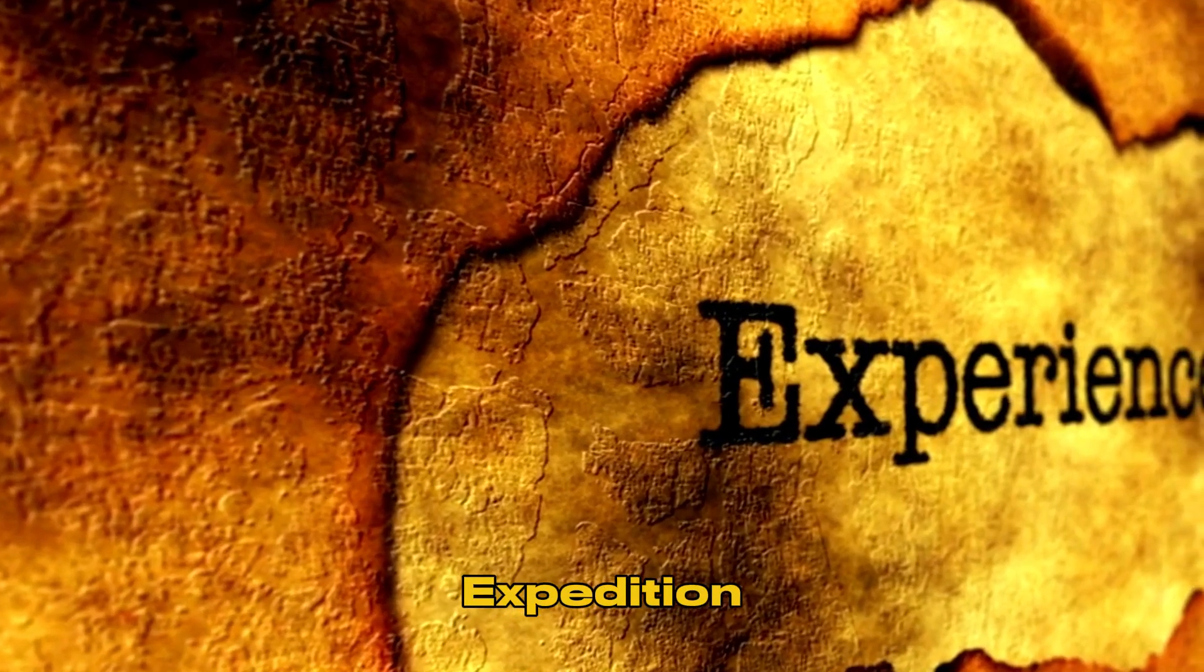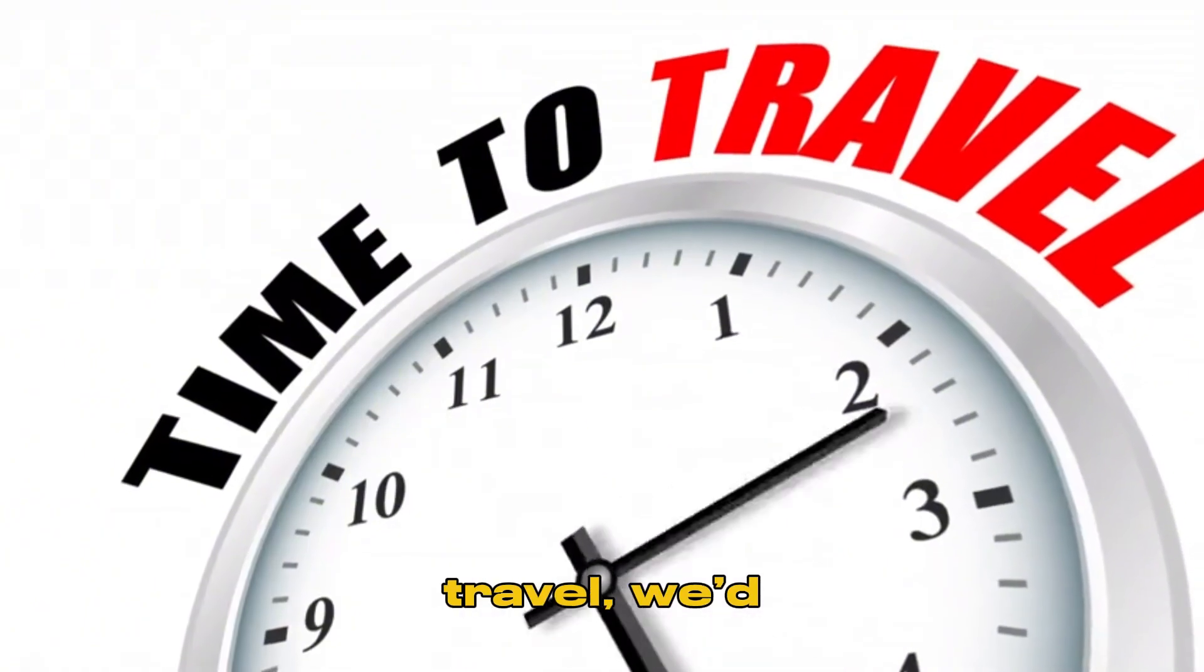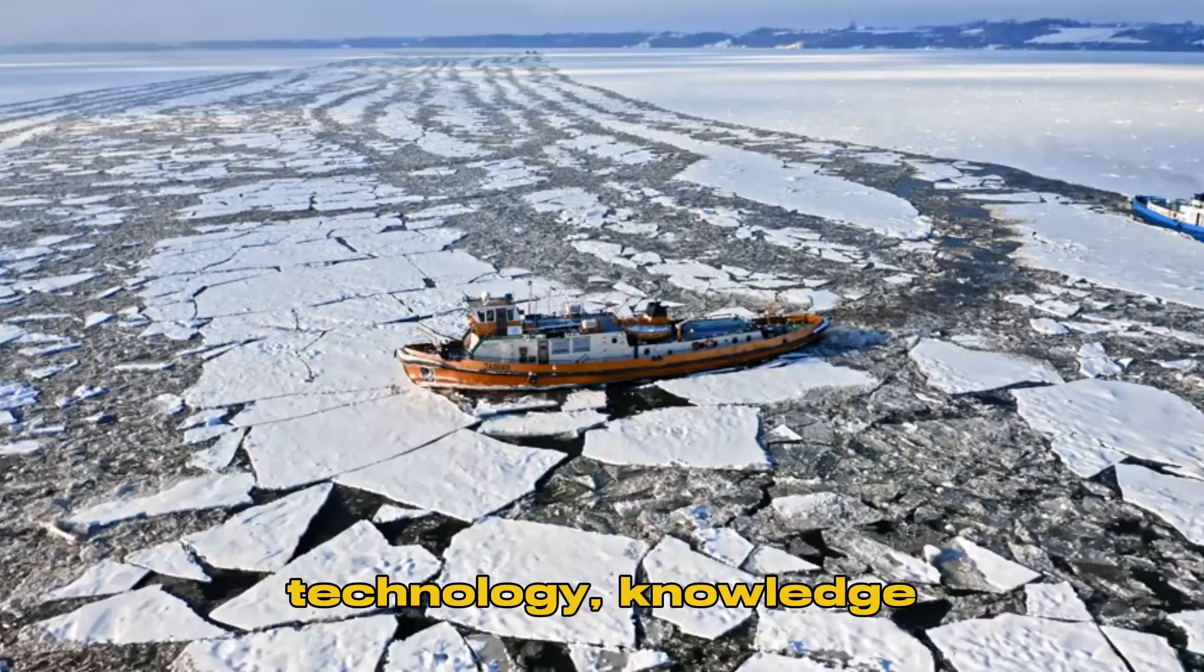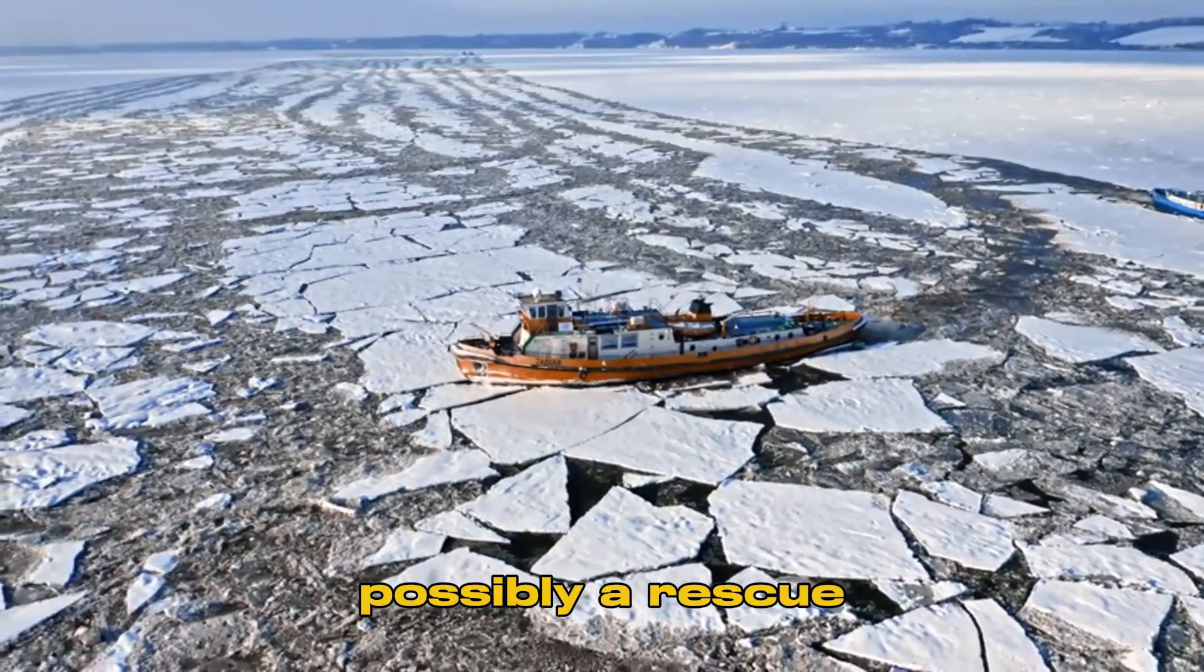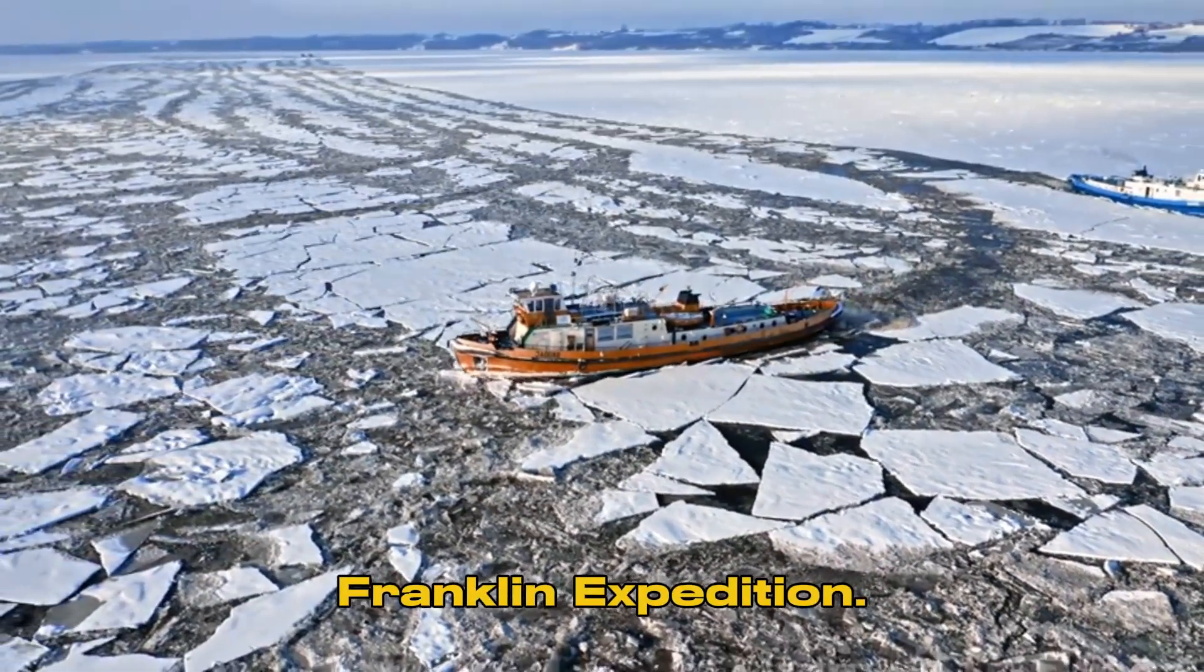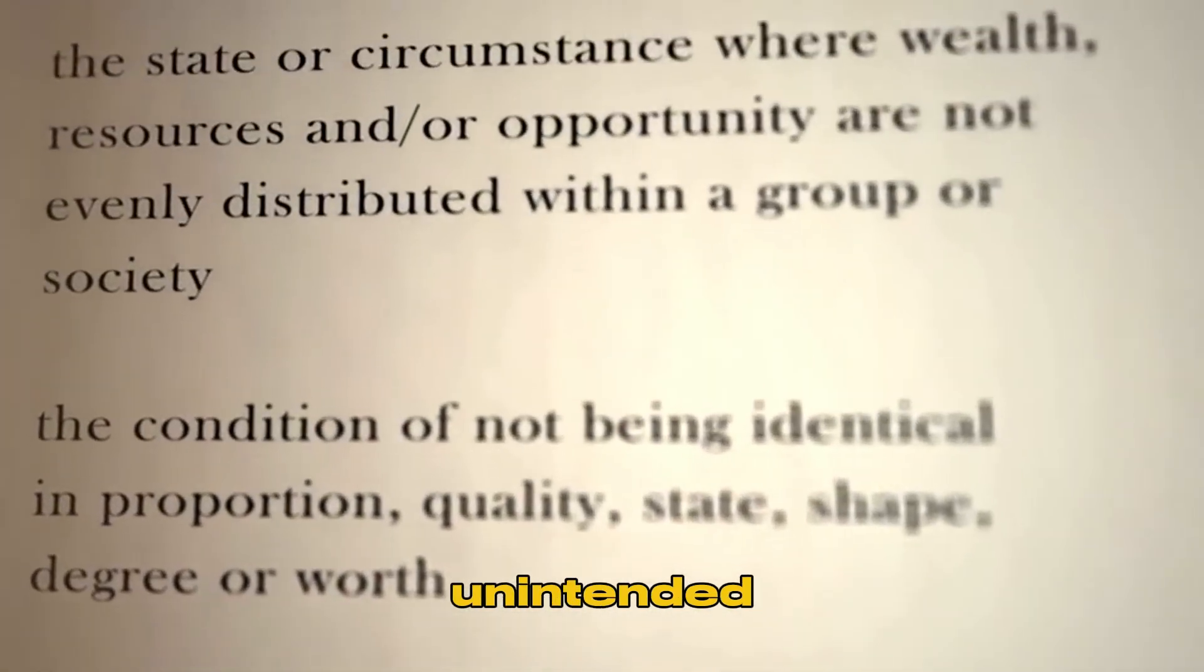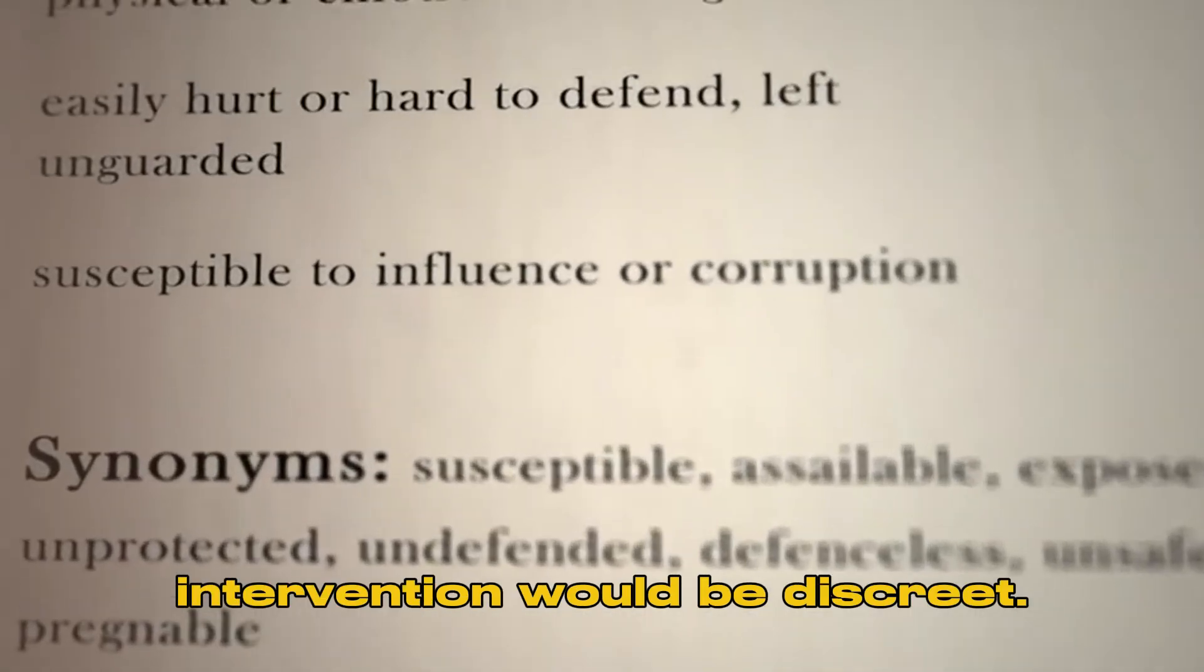Step 6: Saving the Franklin Expedition. Once we've mastered time travel, we'd plot our course back to 1845. Armed with modern technology, knowledge of the Arctic, and possibly a rescue team, we could intervene to save the Franklin Expedition. We'd need to be careful not to alter history in ways that could have unintended consequences. So perhaps our intervention would be discreet.